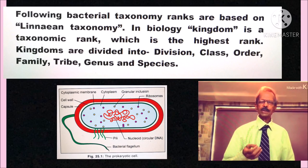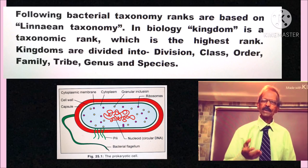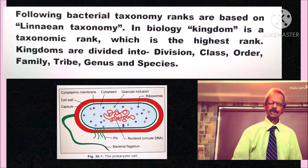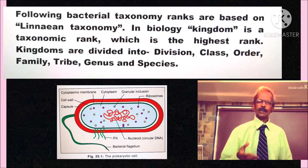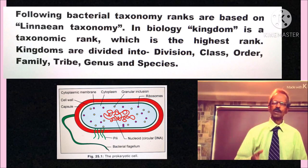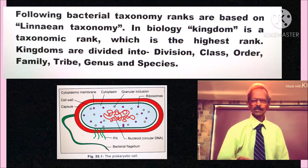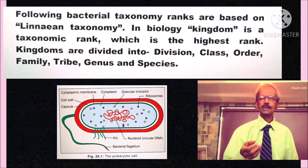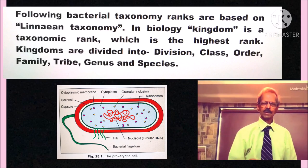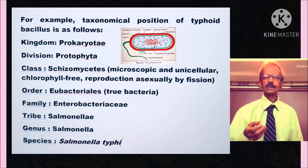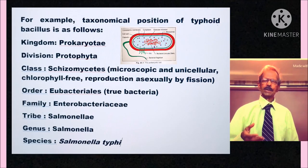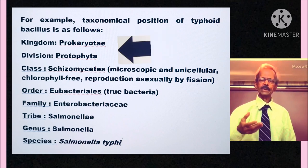In biology, kingdom is the taxonomic rank which is the highest rank. Kingdoms are divided into division, class, order, family, tribe, genus and species. For example, the taxonomical position of typhoid bacillus is as follows.